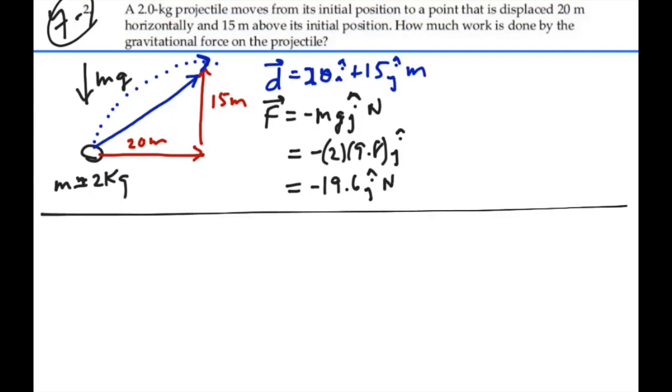So there's our force, and there's our displacement as vectors. We know that work, which is a scalar, is the dot product between the force and the displacement. So in this case, that's going to be negative 19.6 j dotted with 20i plus 15j.